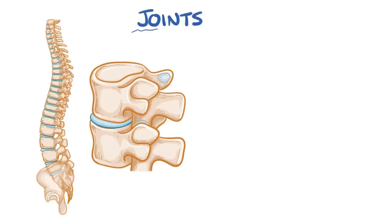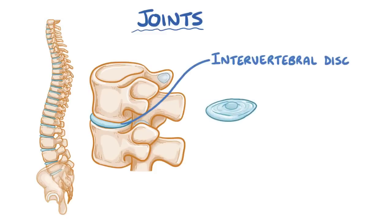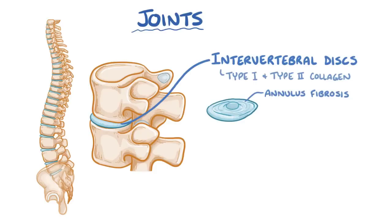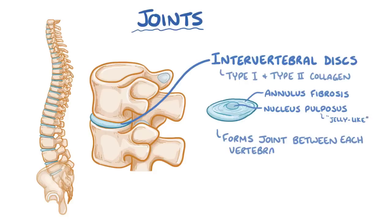There are two types of joints between the vertebrae. Between each of the vertebral bodies is an intervertebral disc, which is made of type 1 and type 2 collagen, and has two parts: the annulus fibrosis, an outer fibrous ring, and the nucleus pulposus, an inner jelly-like substance. This disc forms a joint between each vertebra, and it allows slight movement and acts as a shock absorber.